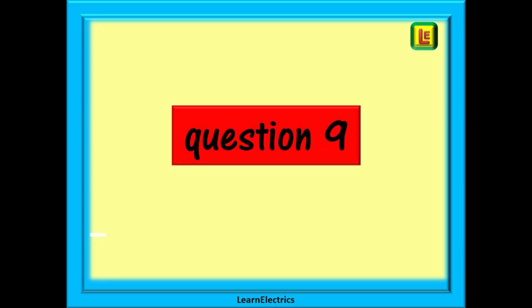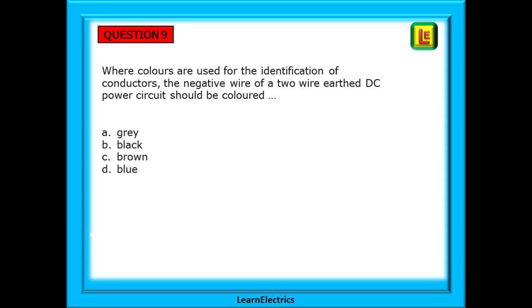Question 9: where colours are used for the identification of conductors, the negative wire of a two-wire earthed DC power circuit should be coloured what? Pause, find the table, and write down the selection.